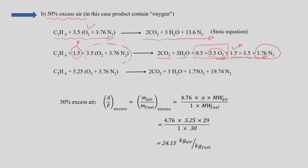Calculating these values: for C2H6 with N moles of air (where N = 1.5×3.5 = 5.25), the product contains 2 moles of CO2, 3 moles of H2O, 1.75 moles of oxygen in the flue gas, and the corresponding moles of nitrogen.